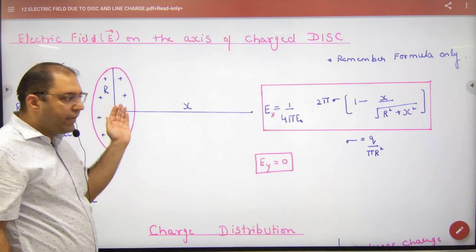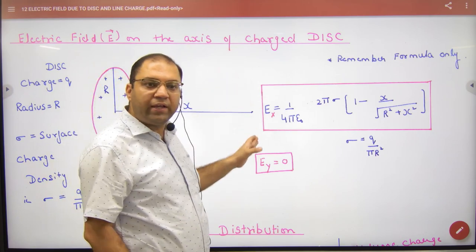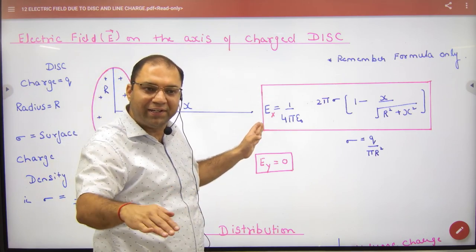With the ring. You will take one ring and remember that E in y-axis cancels - E sin theta, E sin theta. It was only along with x.